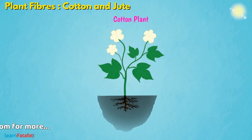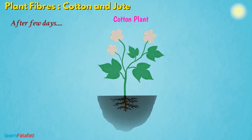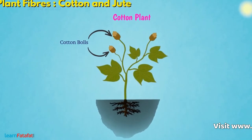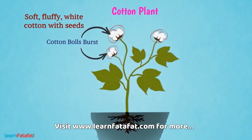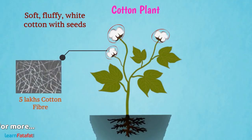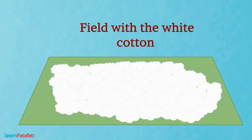During flowering, the cotton plants produce flowers of yellowish white color. After a few days, these flowers turn pink-red. Slowly, flowers change into green cotton balls. A grown cotton ball is similar in size to that of a lemon. After maturity, these balls burst open and we see soft fluffy white cotton with seeds covered in it. A single cotton ball can contain about 5 lakh cotton fibers.